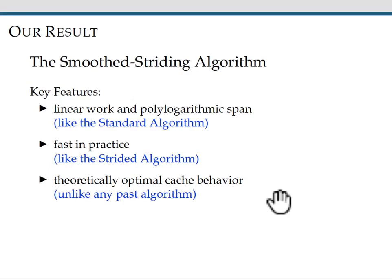And our result is the smoothed-striding algorithm. We created an algorithm with three key features. First, it has linear work and polylogarithmic span. These are the same theoretical guarantees as the standard algorithm. Number two, it's fast in practice, just like the strided algorithm. And number three, it has theoretically optimal cache behavior, unlike any past algorithm.